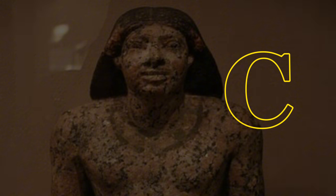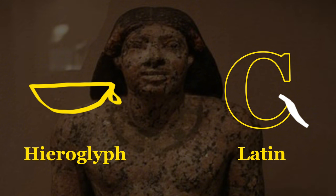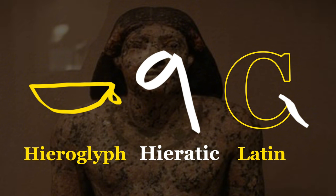The letter G was later introduced into the Latin alphabet as a modification of C to represent the G sound — a development attributed to Spurius Carvillius Ruga around the 3rd century BCE. The inspiration for its appearance can be seen in the hieratic version of the Egyptian bowl, but with the re-inclusion of the once-lost handle. Fascinating.